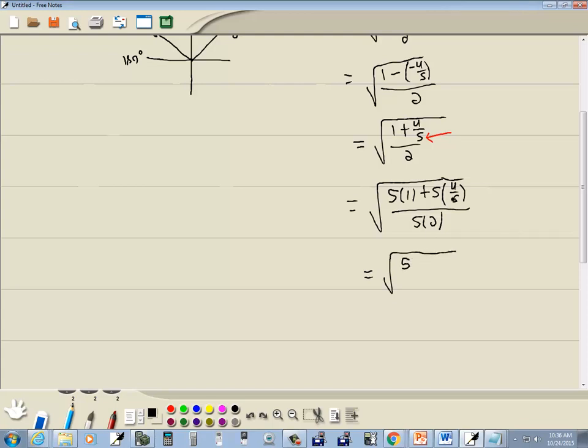5 times 1 is 5. These 5's cancel gives us 4 over 5 times 2 is 10 which gives us square root of 9 tenths.